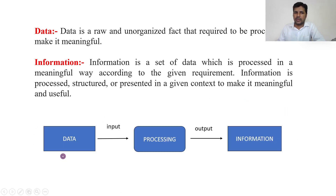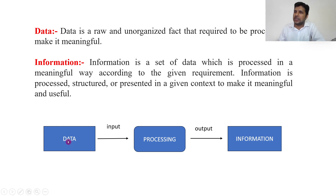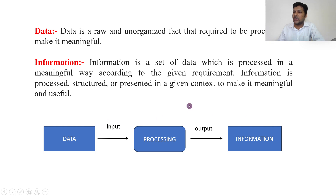For example, think of a tree as data — we cannot use it directly. We cut it and make it into a bench; then the bench is useful. Similarly, data must go through a process to become information that we can use to take decisions. Without data we cannot get information, but data can exist without information. The only difference is processing — before processing it is data, after processing it is information.